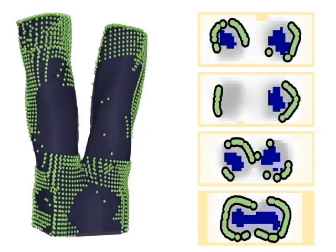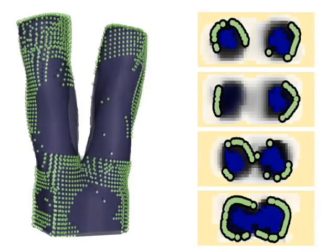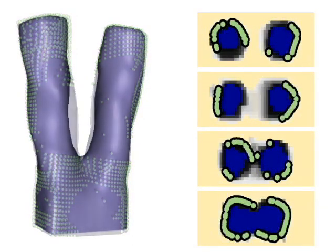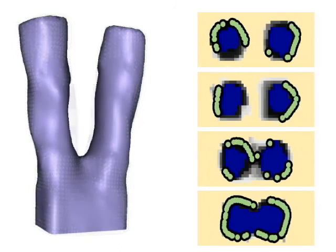At each iteration, we solve a big linear system to find material values for the voxels and flow values between them. Notice that as we develop a coherent flow, even slices with hardly any data take on the correct shape.